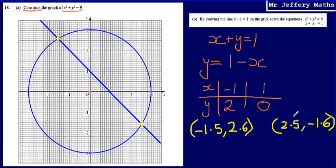So the solutions to these equations, I would say x equals negative 1.5. So just taking it from the coordinate, that's my x coordinate and y, the y coordinate would be 2.6, and here the x coordinate is 2.5